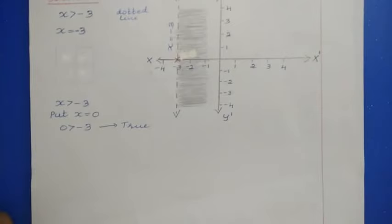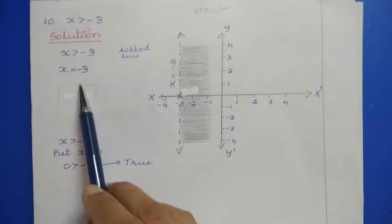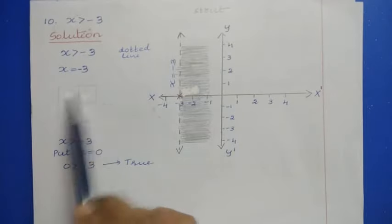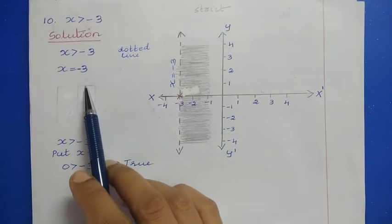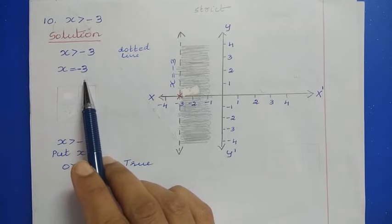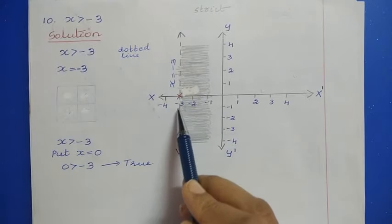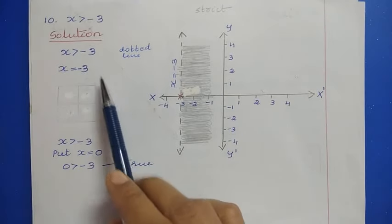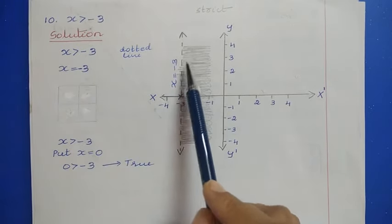Question number 10: x > -3. Convert to equality: x = -3. No need to find additional solutions — draw a line directly. Since it is a strict inequality, use a dotted line. When x equals a constant, the line is parallel to the y-axis. For all values of y, x = -3, so draw a dotted line at x = -3, parallel to the y-axis.